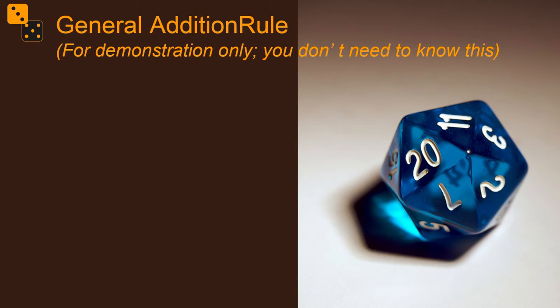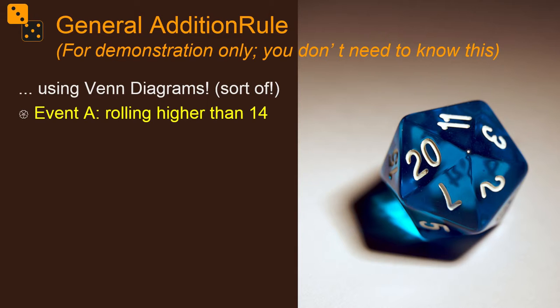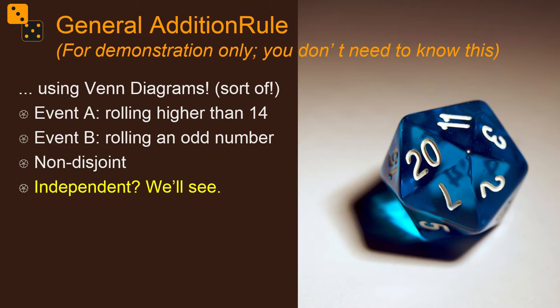Now let's run through an example where I show you how the general addition rule works. Not that you need to know this necessarily. It might be useful for some people. It might be interesting. We're kind of going to use Venn diagrams. Let's suggest that there are two probabilities with this D20, this 20-sided die. Event A is that you roll a number higher than 14 on a roll. And event B is you roll an odd number on that roll. Those two things are not disjoint because even if it's a single roll, as I've said it, I'm going to say that that's the case, you can have a number that is higher than 14 and that is odd. So they're non-disjoint. Are they independent? Actually, this could be tricky to think through. And I'll show you that they are in a minute.